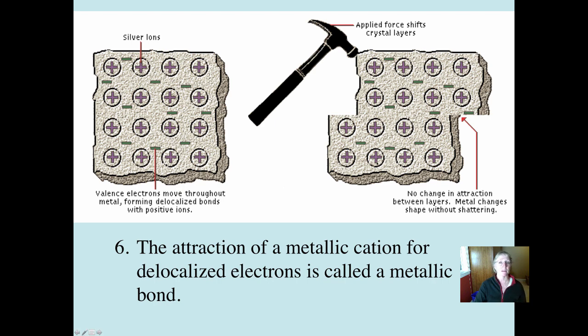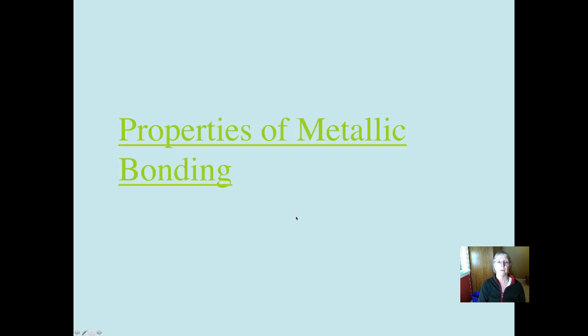What makes this different is that these are all atoms of the same element — these are not ions. In addition to that, the electrons being able to flow account for the ability to conduct electricity and also to conduct heat, which is why we use metals in cookware.